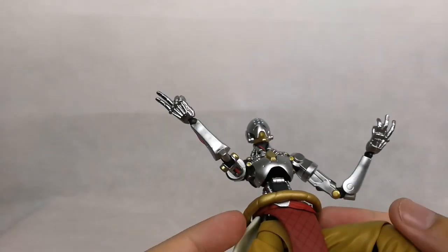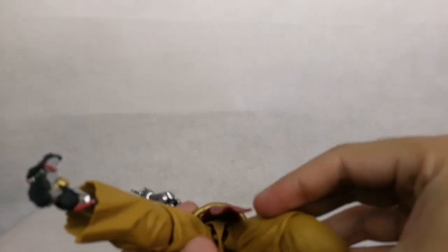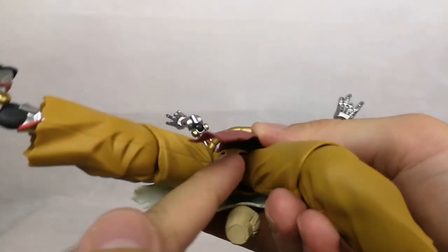So we have no waist rotation at all, but we have ball joint to ball joint system on those legs. So it gives us a decent spread.